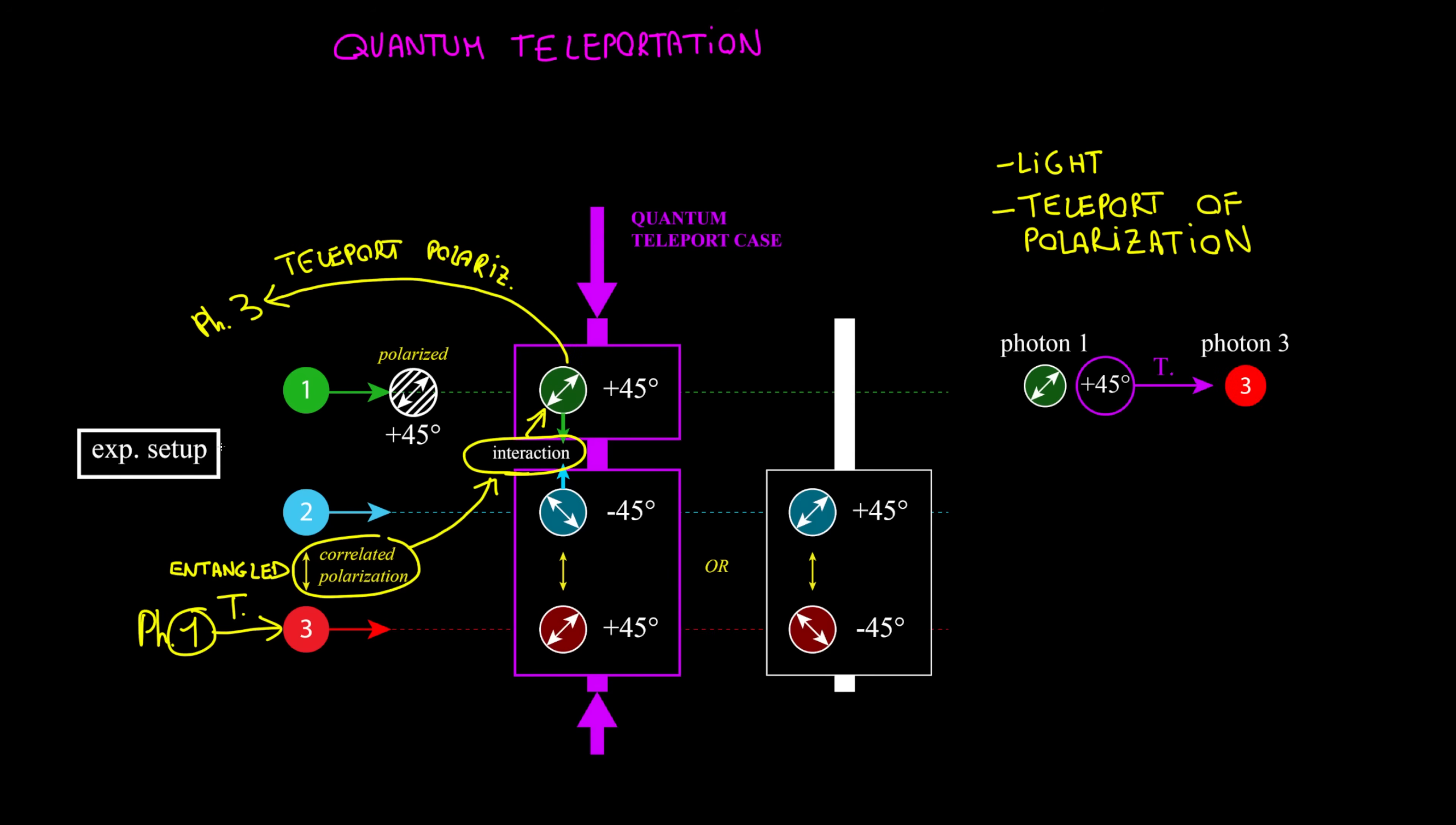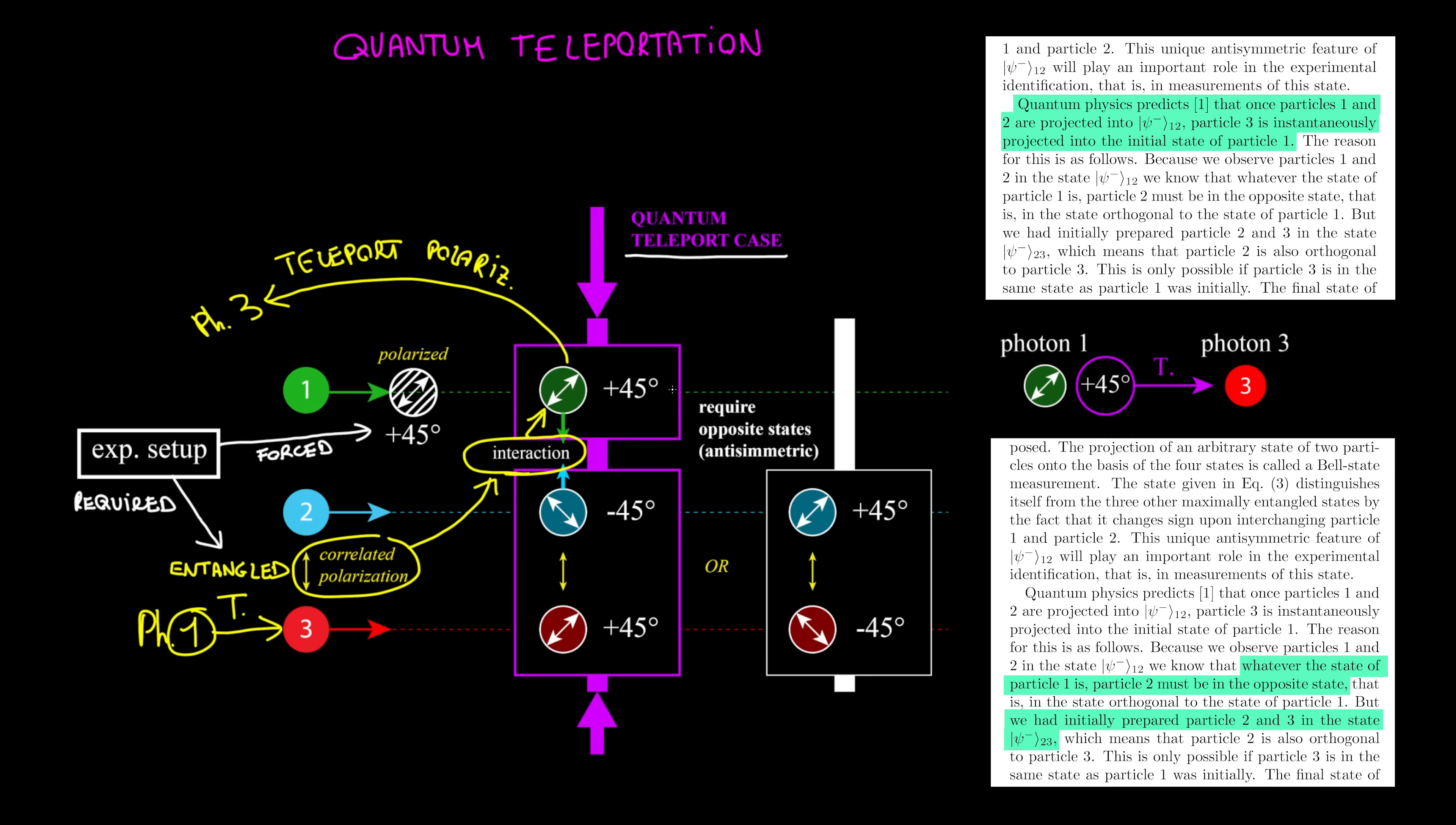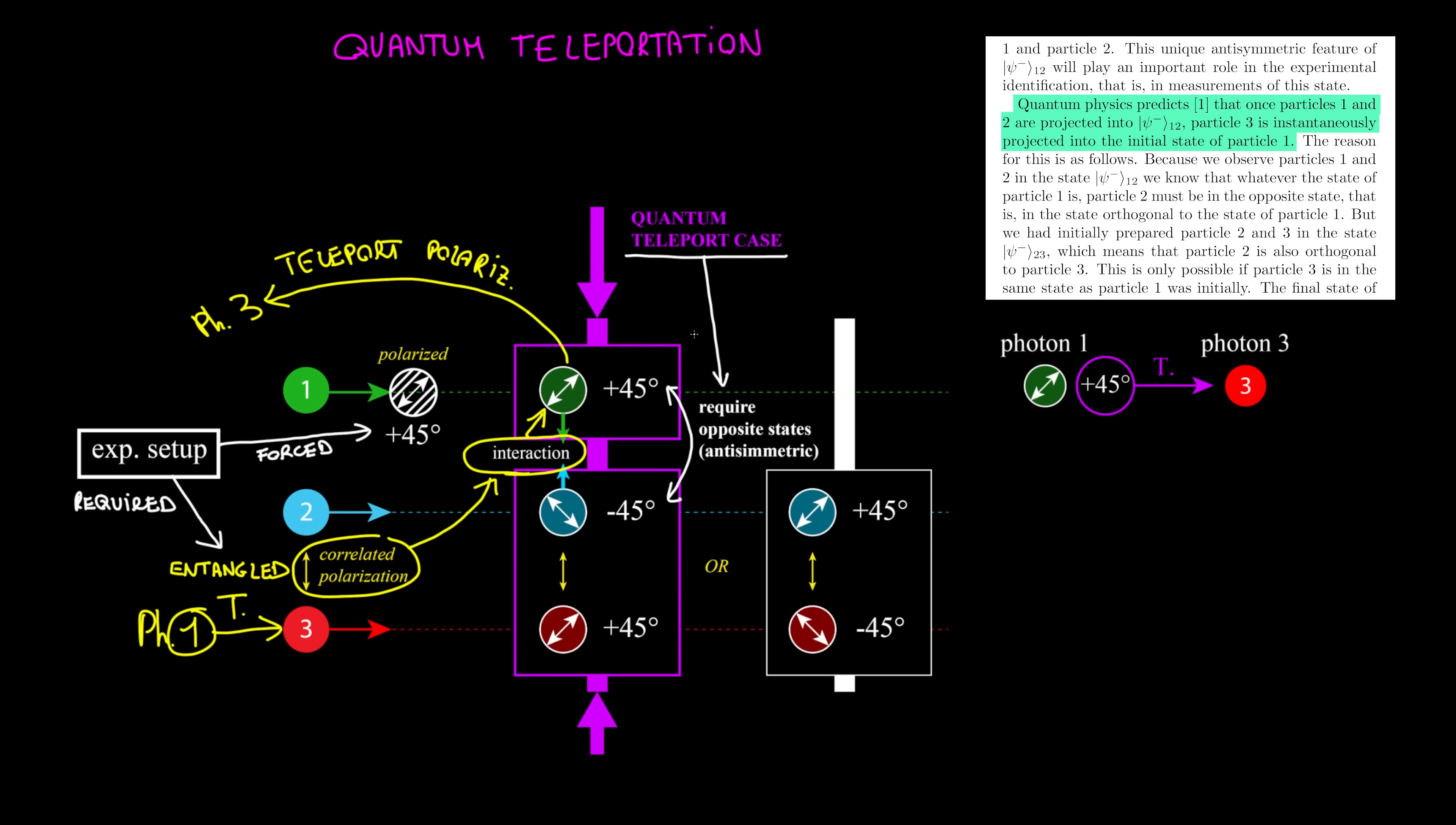In the experiment, photon 1 is forced at plus 45 polarization and photon 2 is entangled with photon 3. So the teleport case is when photon 1 interacting with photon 2 at minus 45 teleports its plus 45 polarization to photon 3, which however already has plus 45 polarization, even without teleport. Nevertheless, this is the experimental quantum teleportation.